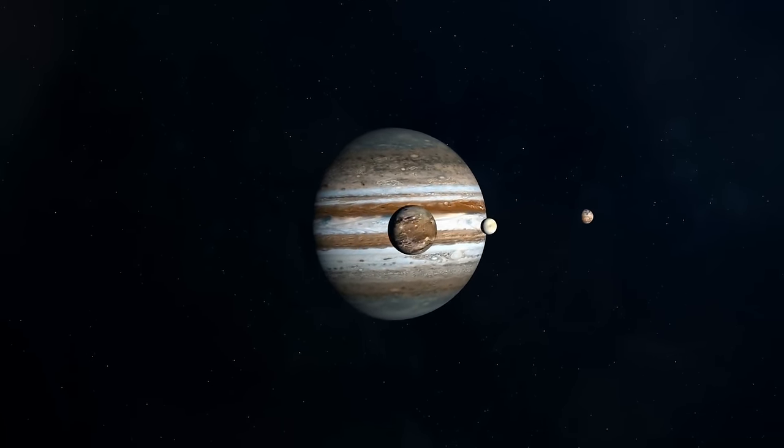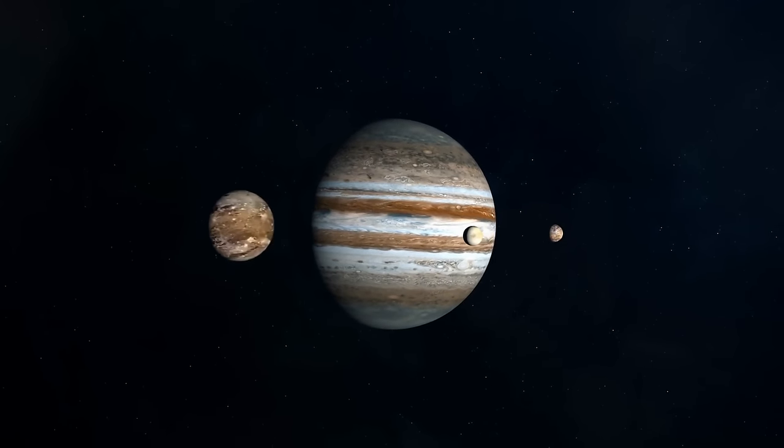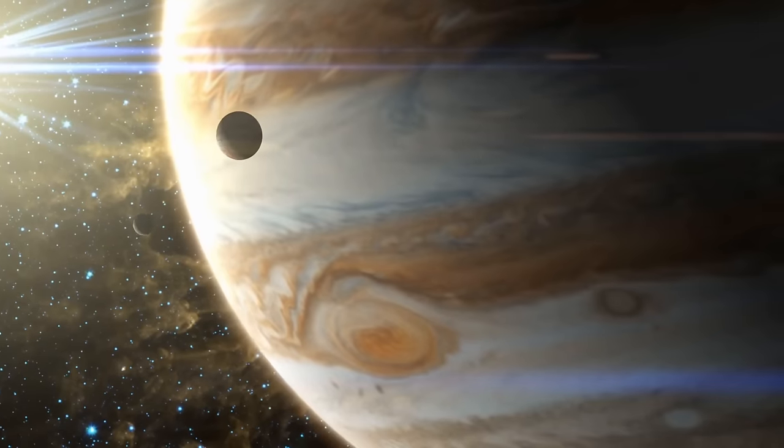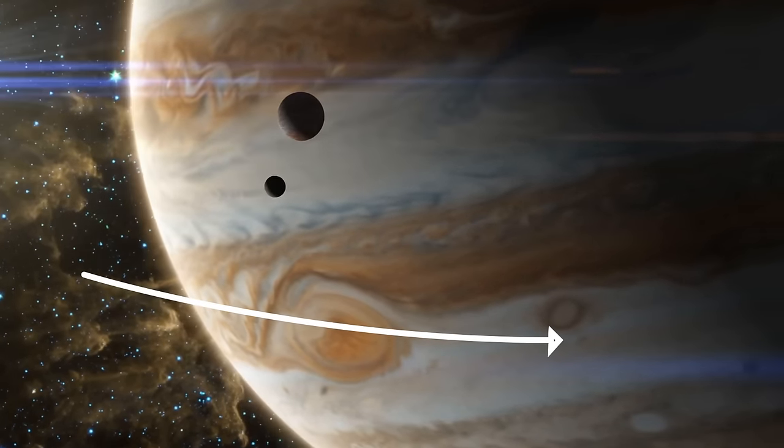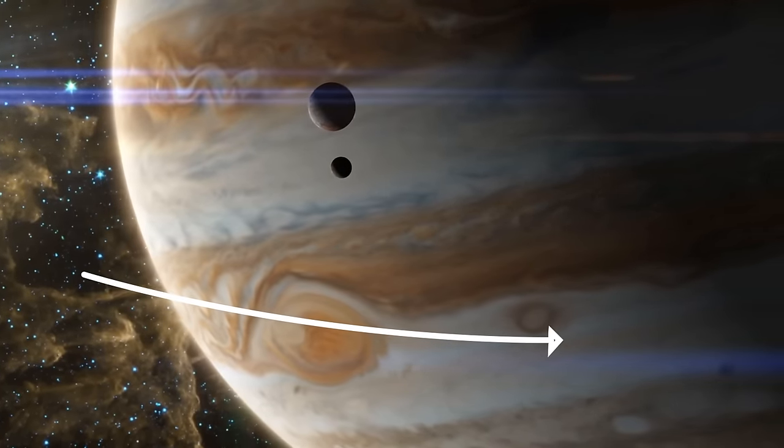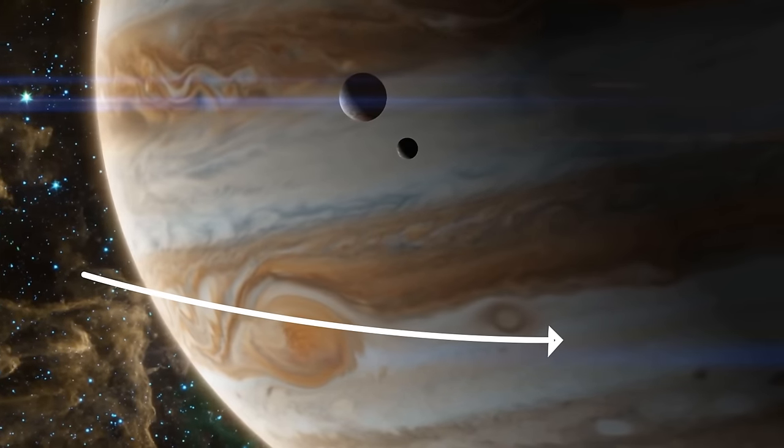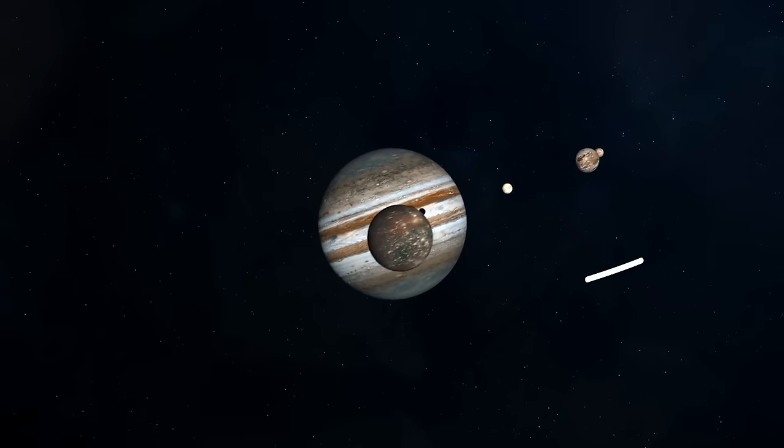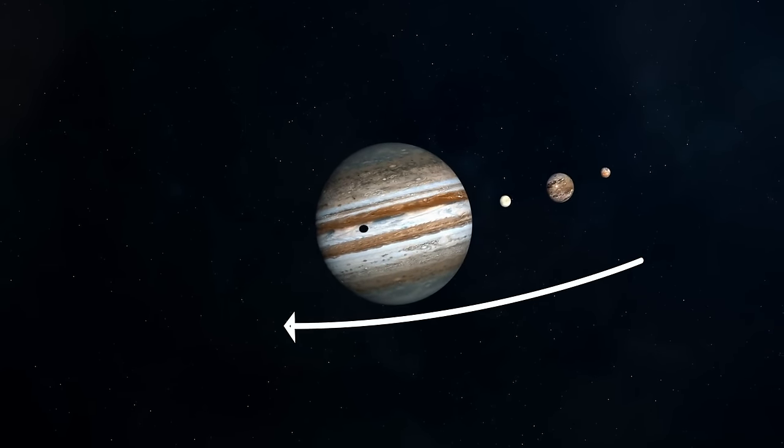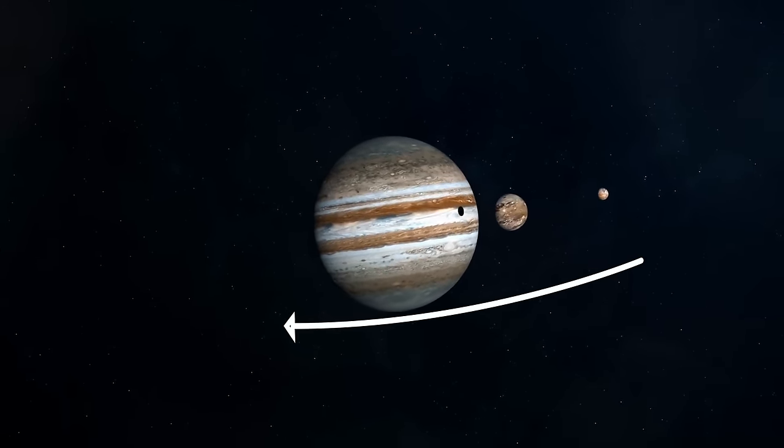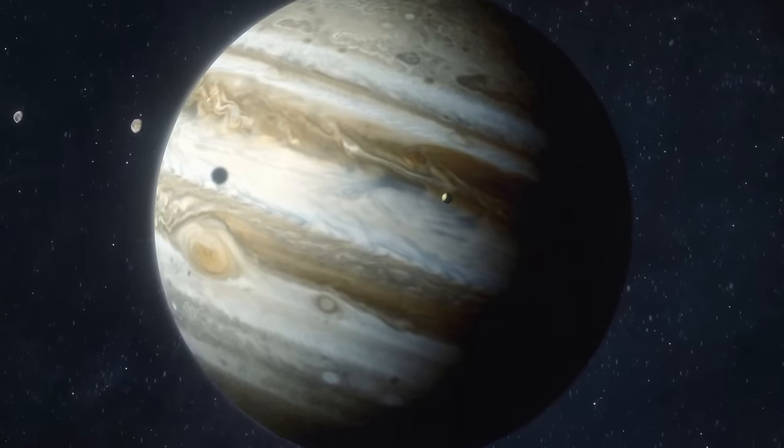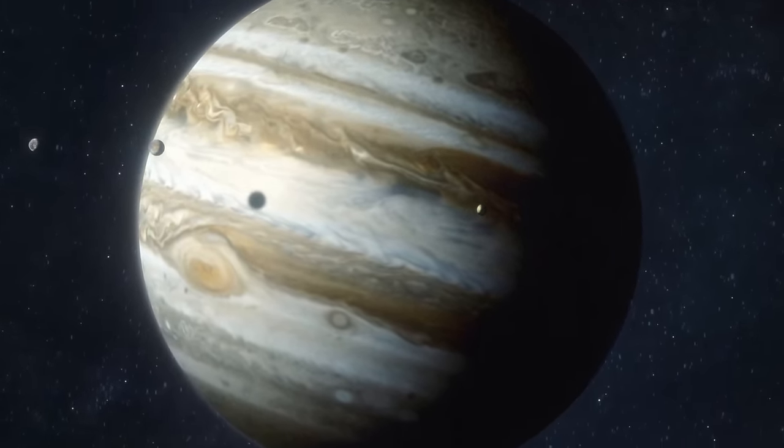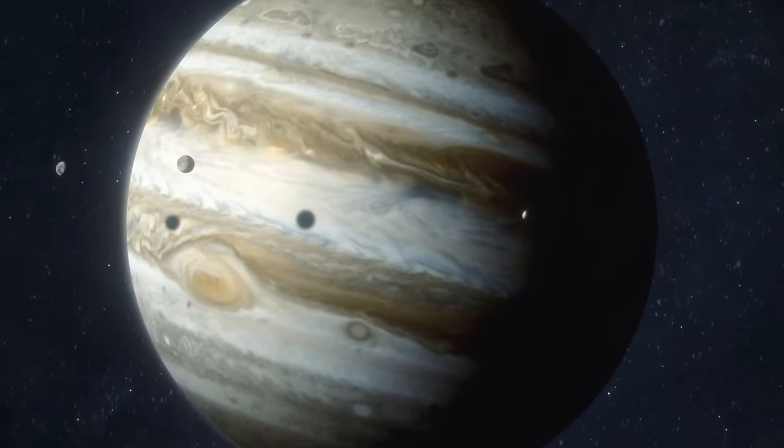But the coolest thing was that one of the newly discovered moons was very unusual. The thing is, Jupiter's moons move in packs. So two of the new satellites were spinning with a group that rotated in the same direction as the gas giant, and the rest was in a cluster spinning against the planet's rotation. As for our weird guy, it was inside the second group but spinning with Jupiter.